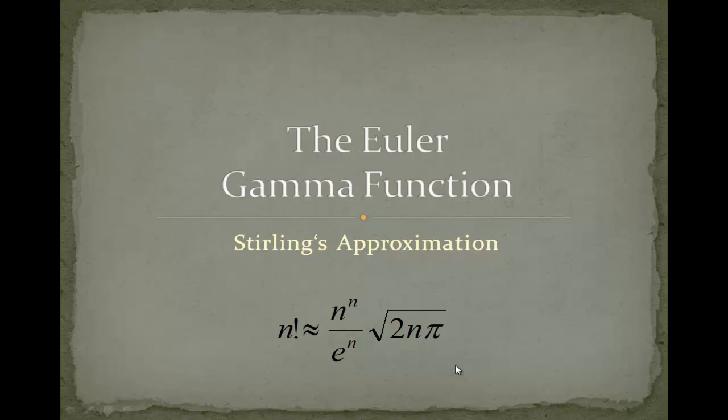Hello and welcome to my new video about the gamma function. In this video we will derive the famous Stirling's approximation, which you can see here beneath. It's n factorial, approximately equal to n to the n over e to the n, times the square root of 2n pi.